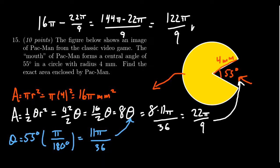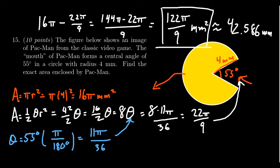This would be millimeters squared. That would be the exact area of Pac-Man. This last step is not necessary for the test. The exact answer is actually the preferred answer for full credit. But if you put that in your calculator, you would end up with 42.586 millimeters squared for the area of Pac-Man.